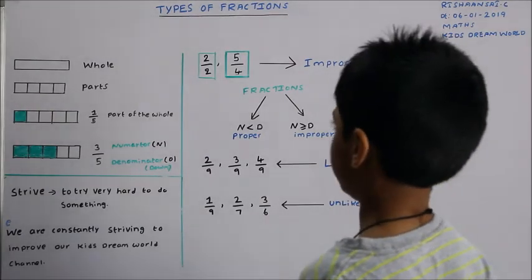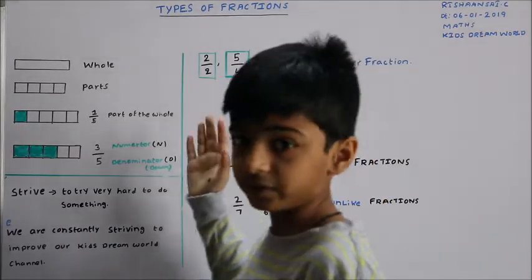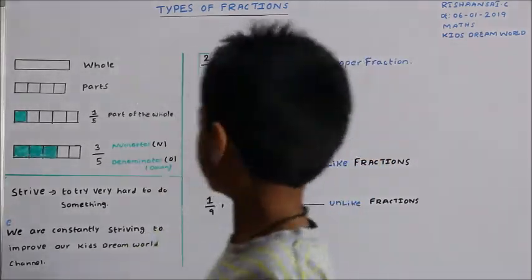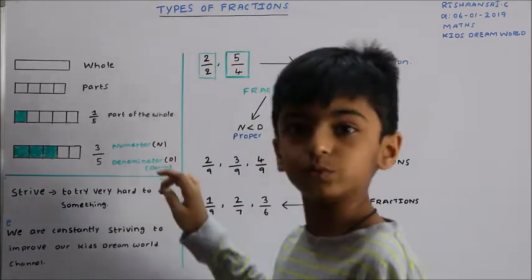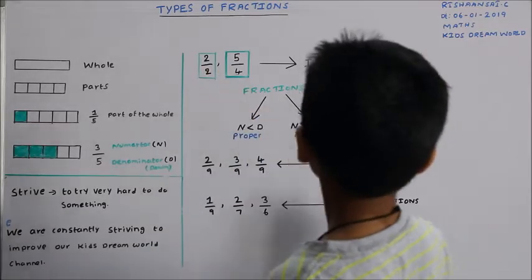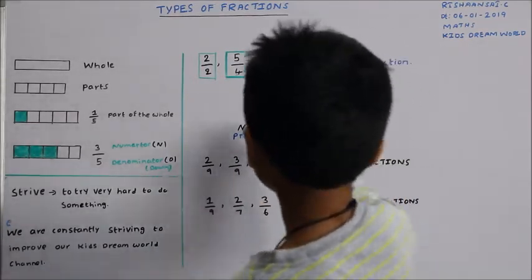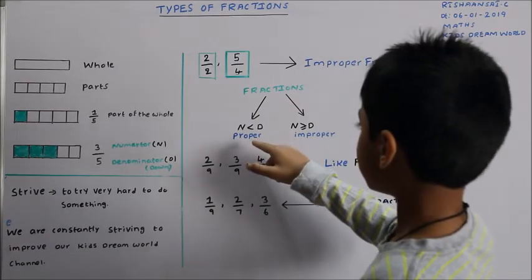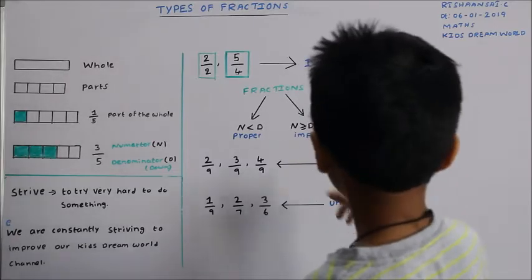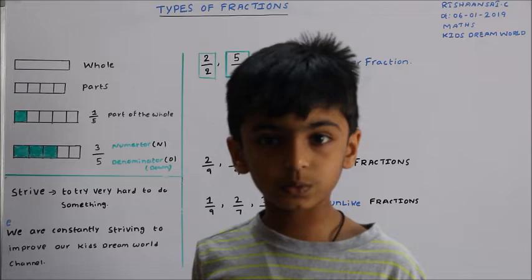Let's go to improper fractions. Improper fraction means greater than or equal to, like 5/4, and it could be equal to also like 2/2. Now let's compare proper fraction to improper fraction. Proper fraction is less than, and improper fraction is greater than and equal to.